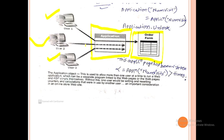After user1 unlocks, user2's request is given and a response is provided. The counter variable is incremented for user1 and during incrementation the lock method is called again, preventing other users from accessing it simultaneously.